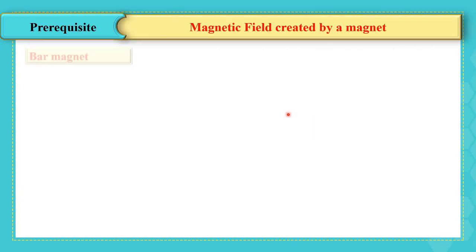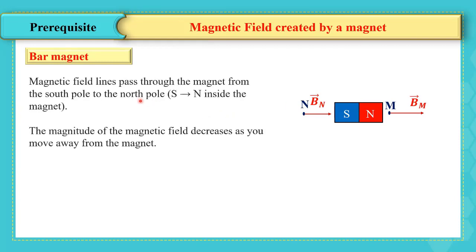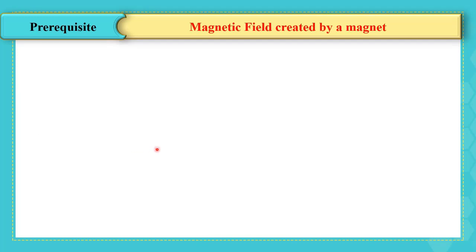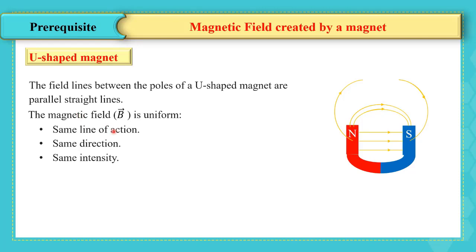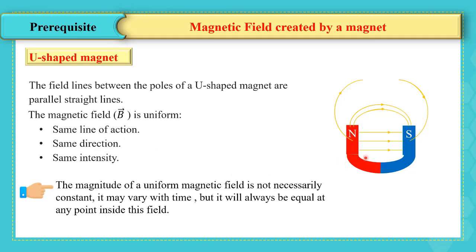In the case of a bar magnet, the magnetic field lines pass through the magnet from S to N inside the magnet. The magnitude of the magnetic field decreases as you move away from the magnet. A U-shaped magnet creates a uniform magnetic field between its poles, since the field lines are parallel and of the same magnitude and direction. Note that the magnitude of a uniform magnetic field is not necessarily constant — it may vary with time, but will always be equal at any point inside this field.